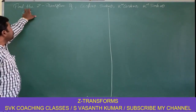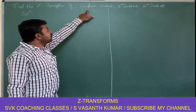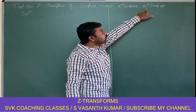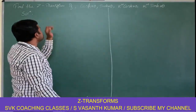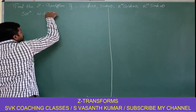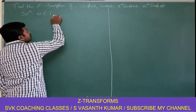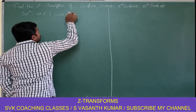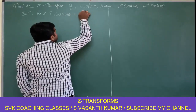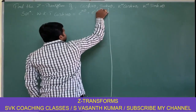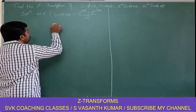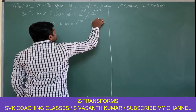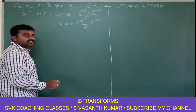Now we shall solve one more problem: find the Z transform of cos hyperbolic n theta, sin hyperbolic n theta, k power n cos hyperbolic n theta, and k power n sin hyperbolic n theta. For the solution, we should know the definition of hyperbolic functions. Cos hyperbolic n theta can be written as e power n theta plus e power minus n theta all divided by 2. Similarly, sin hyperbolic n theta is e power n theta minus e power minus n theta all divided by 2.